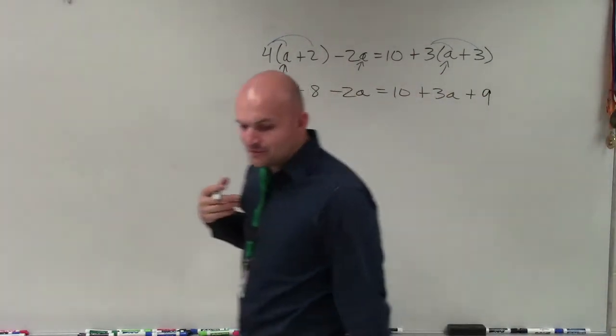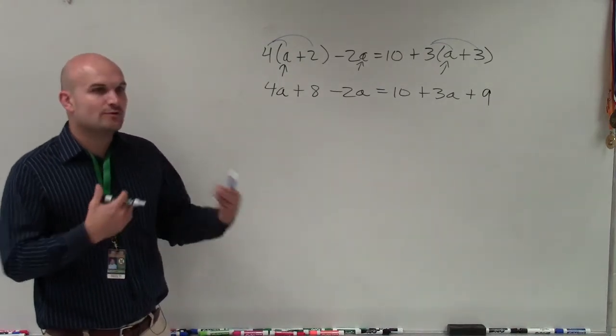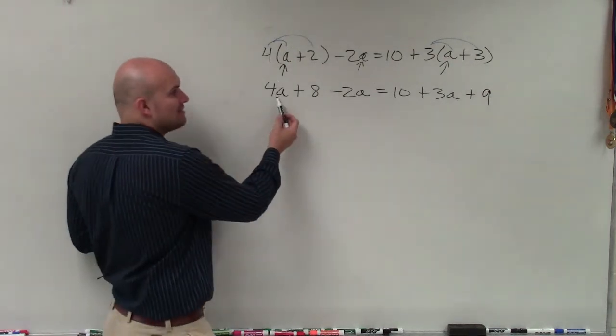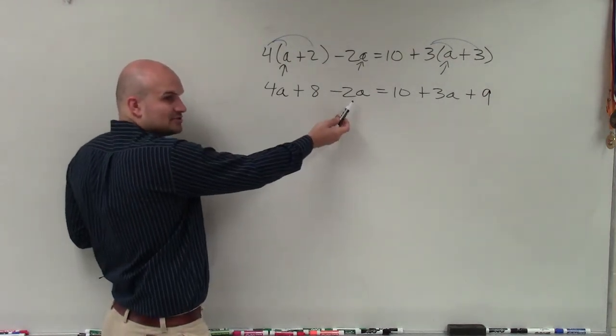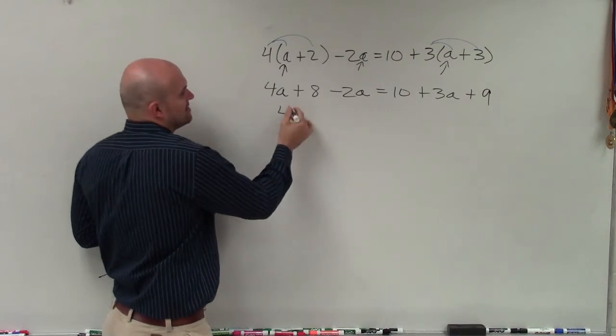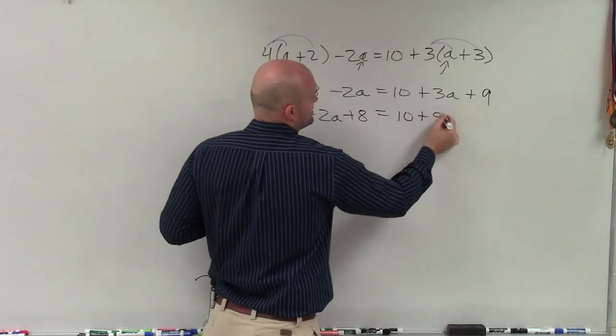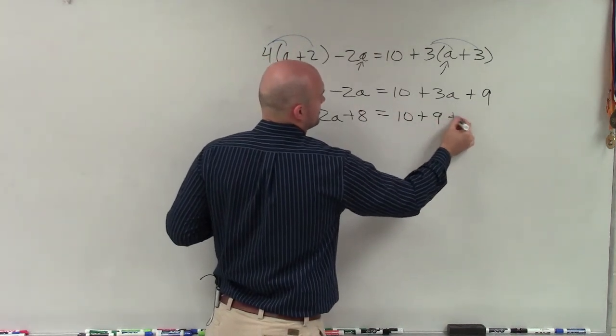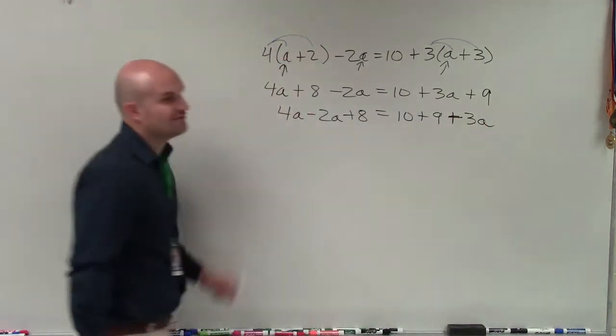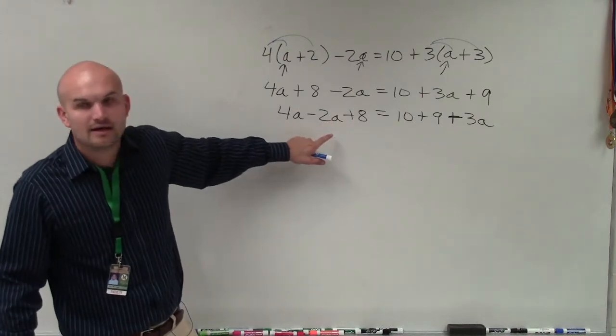When you're working through these, a lot of times it's helpful to rework the problem so you know which like terms you can combine. Because obviously, 4a and negative 2a, those are the same like terms, right? They both have a variable factor of a. So a lot of times, it's helpful just to rewrite it. You do not have to do this step. But I think a lot of times students get mixed up by kind of forgetting how to combine them, because you can't combine a number with a number and a variable.